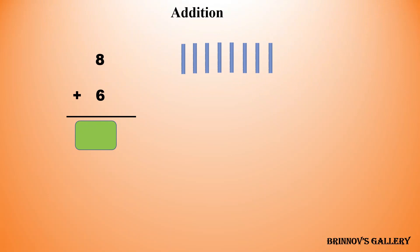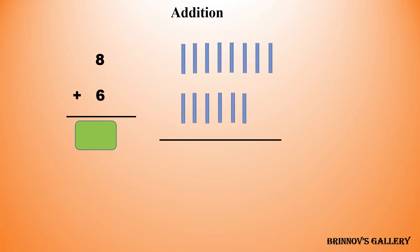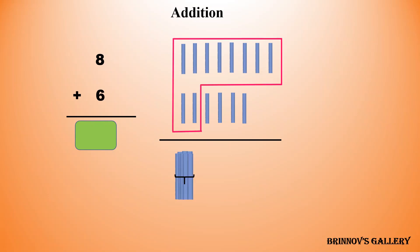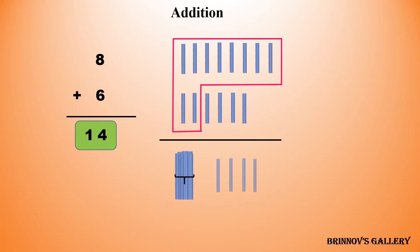8 plus 6. Let's make a group of 10. 1, 2, 3, 4, 5, 6, 7, 8, 9, 10. We have a bundle of 10 and remaining 1, 2, 3, 4 — 4 ones. Now we have one 10 and 4 ones. So, 8 plus 6 is equal to 14.